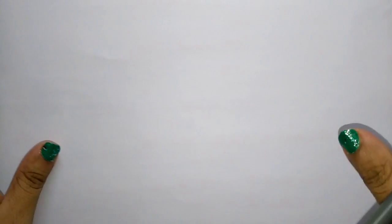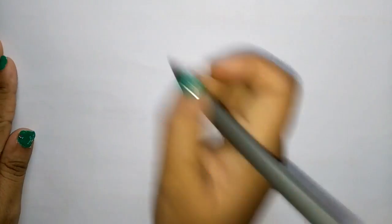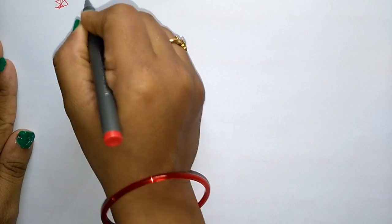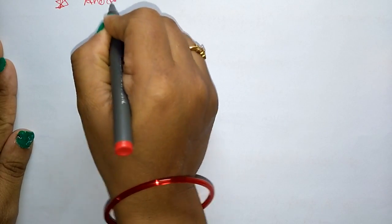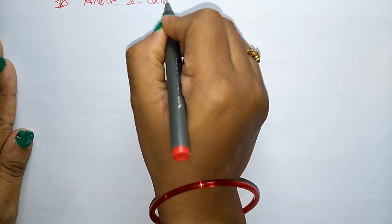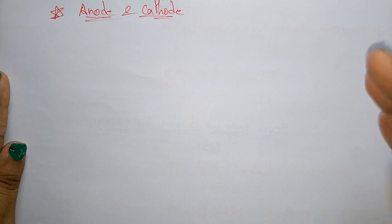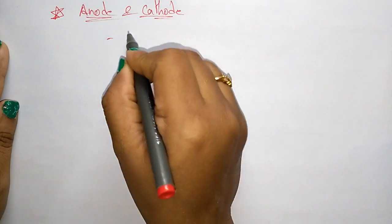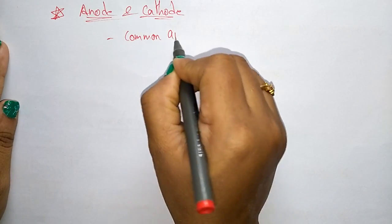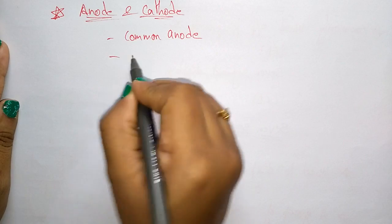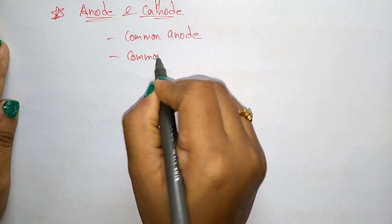In the 7-segment display, we commonly use anode and cathode configurations. With the help of anode and cathode, the LED light can be controlled. There are two types: common anode and common cathode.